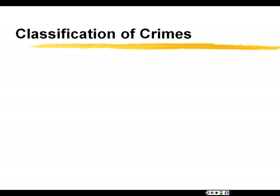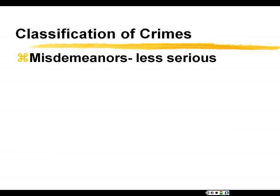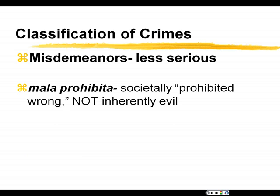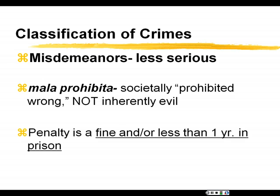The next group of crimes, less serious, are called misdemeanors. These are not inherently evil — we call them mala prohibita. They're prohibited because society thinks they're not good things, but they're not so serious. Typically you're not in jail as long, if you go to jail at all, and you may just have a fine. For example, someone walking with open alcohol in Pioneer Square or having a small amount of marijuana — it might be considered a misdemeanor. It's not as serious as murder, so the penalty is going to be less.